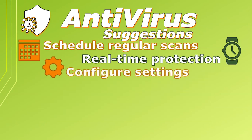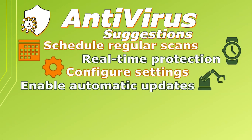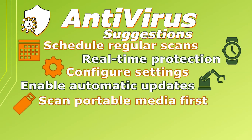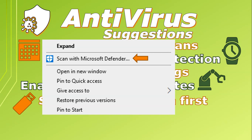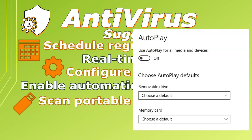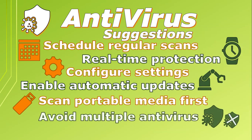Configure the antivirus software settings to suit your needs, including what types of files should be scanned and how often. Ensure automatic updates are enabled so you don't have to worry about manually updating it. Scan portable media like flash drives and external hard drives before using them — right-click on the drive and select the scan option. It's also best to disable the auto-run feature, which runs certain commands when media are inserted in your PC; you can do this in your device settings. Avoid using multiple antivirus programs at the same time, as they can conflict with each other and cause performance issues.